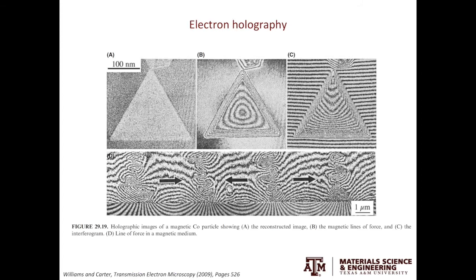Conventionally, electron holography has been used to study magnetic materials. This example is taken from the Williams and Carter textbook. Let's focus on figure B — the magnetic lines are clearly visible in this material.